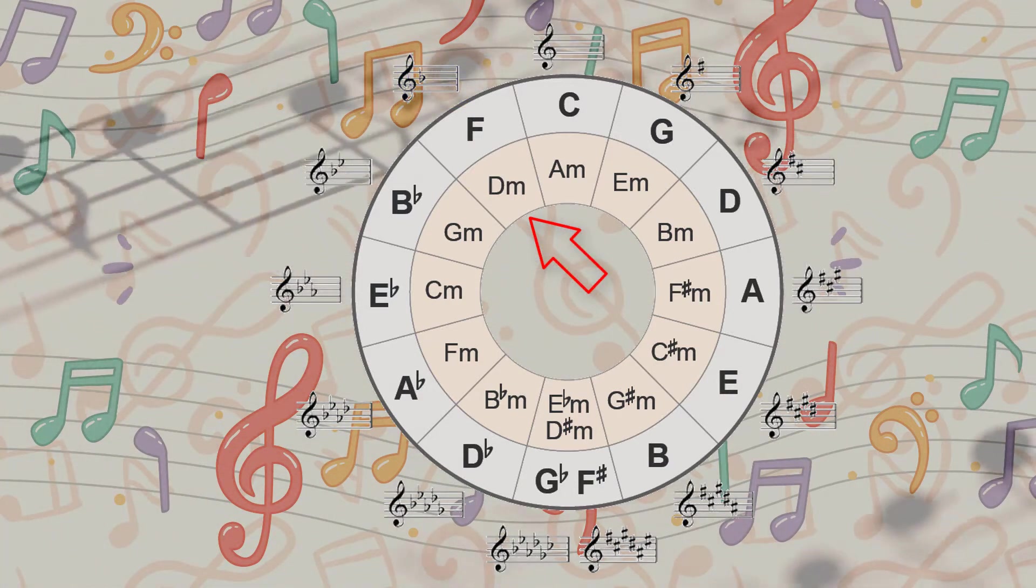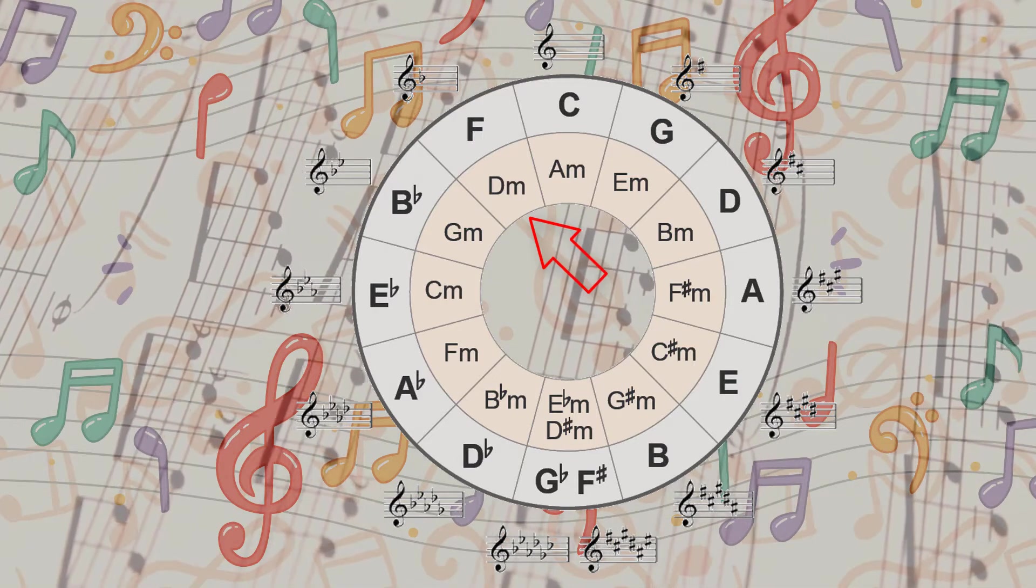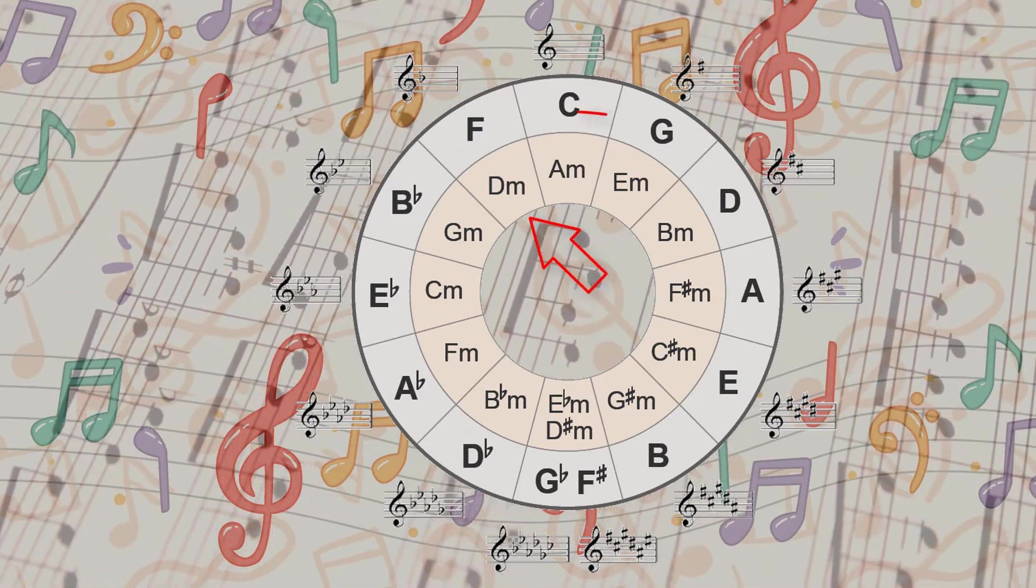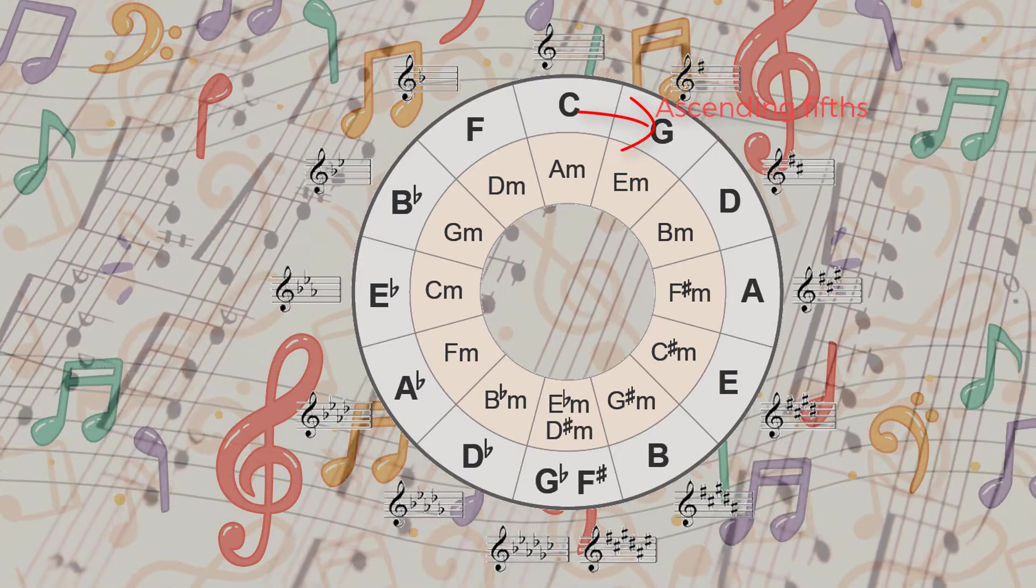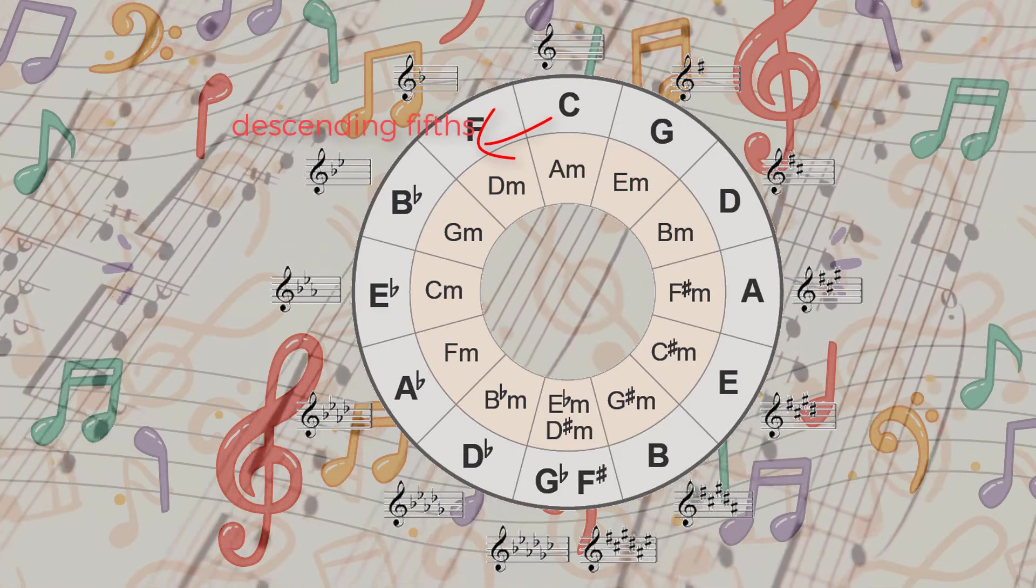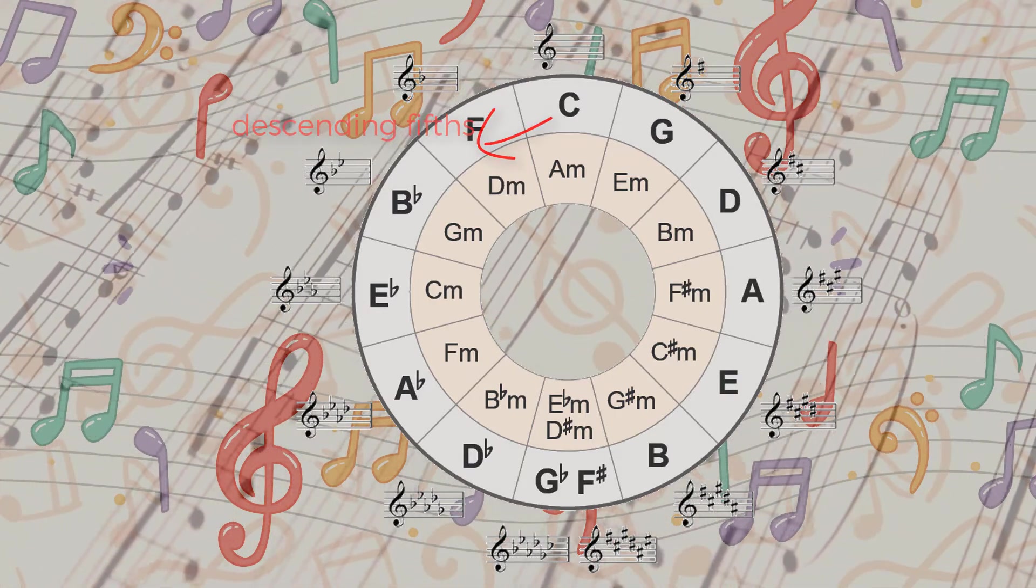...the interval of a perfect fifth, a term we will discuss in later chapters in this course. Moving clockwise from 12 o'clock we're using ascending fifths, and moving counterclockwise from 12 o'clock we're using descending fifths, hence the name circle of fifths.